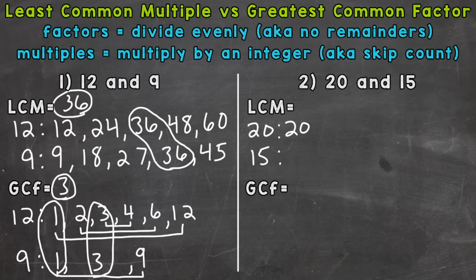So 20 would be 20, 40, 60, 80, 100. So you can start your list by writing out 4 or 5, seeing if you have a match. If not, you can always continue lists. Because remember, multiple lists continue on forever.